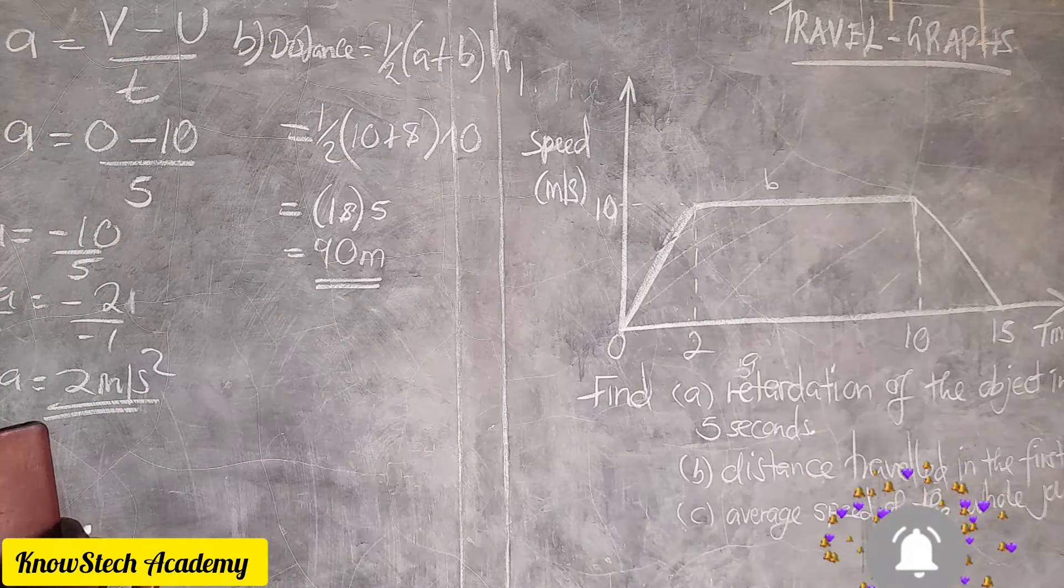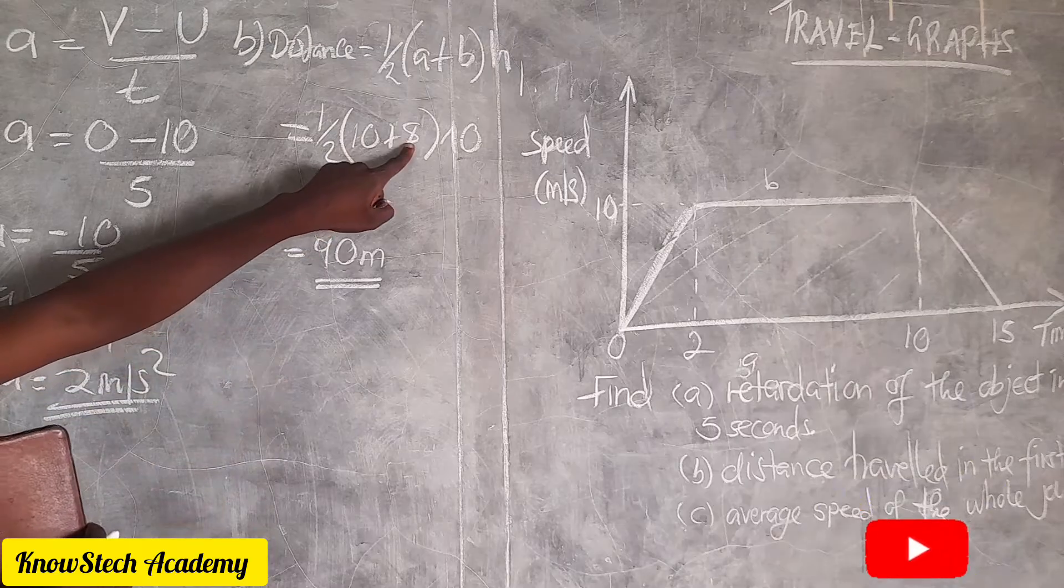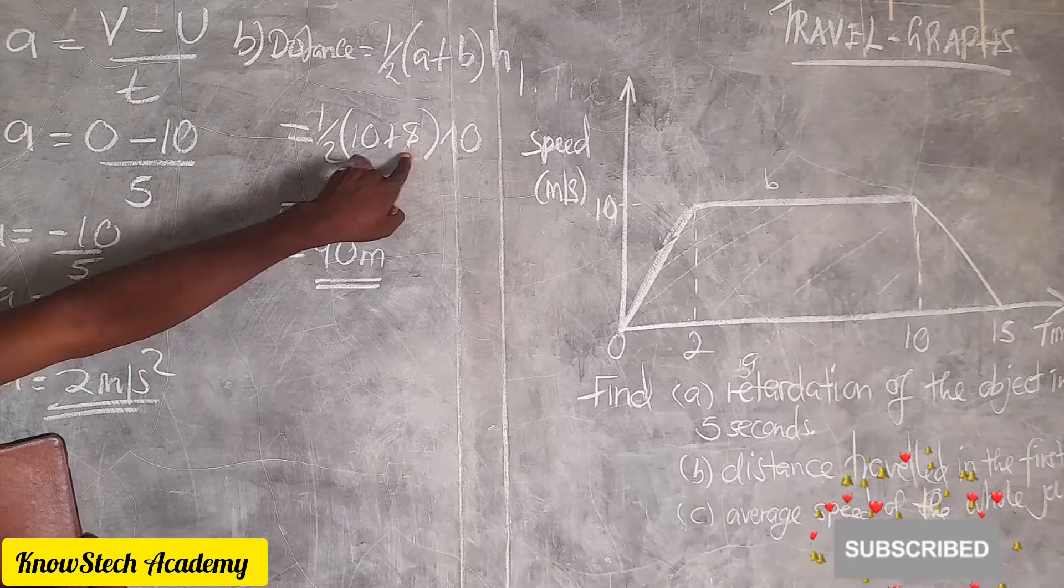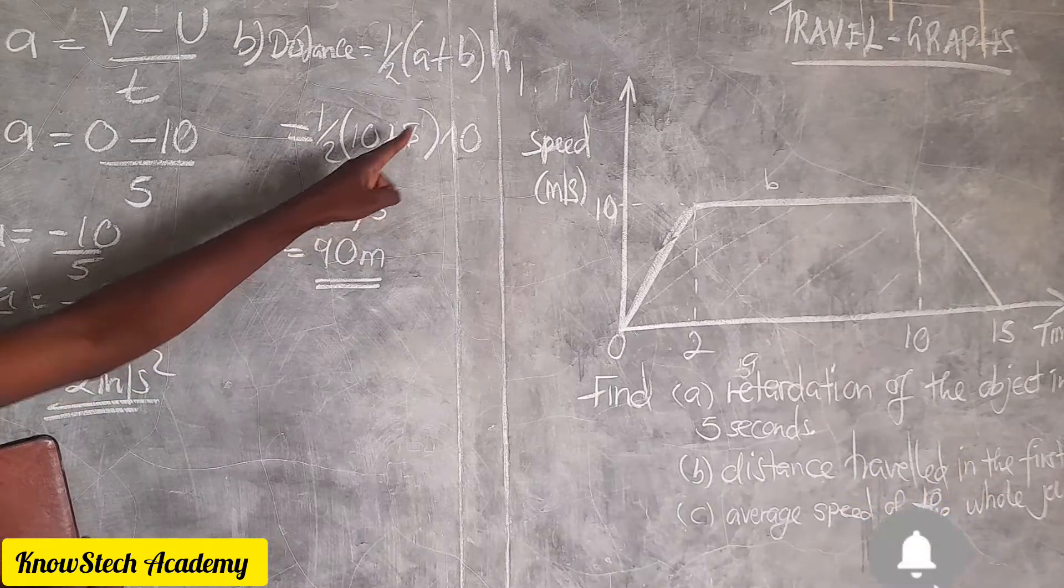90 meters. It's the same as when you add here, it will be 18, then half of 18 is 9, 9 times 10 is 90.